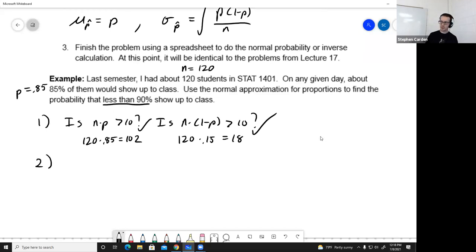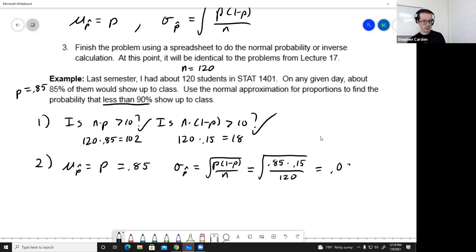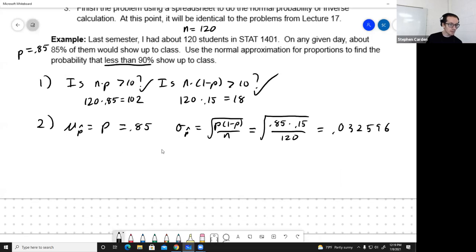So if I'm going to approximate the proportion that show up to class with a normal, what should I use as the mean of standard deviation? Well, for the mean, I'm going to use whatever the true proportion is, which is given to me. The problem is 0.85. So no calculations required for that formula. Just see what p is. Standard deviation of p hat. This is the more complex of the two formulas. 0.85 times 0.15 over 120. For the sake of time, before class, I calculated that out to 56 digits. 0.032596. Okay, and the last step.